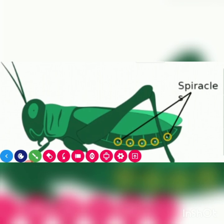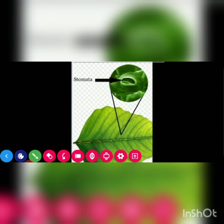So to summarize: human beings breathe through lungs, fish breathe through gills, frogs breathe through both skin and lungs, insects breathe through tiny holes in their body. Plants have small openings on the lower surface of a leaf, and these openings are called stomata. Plants breathe through the stomata.